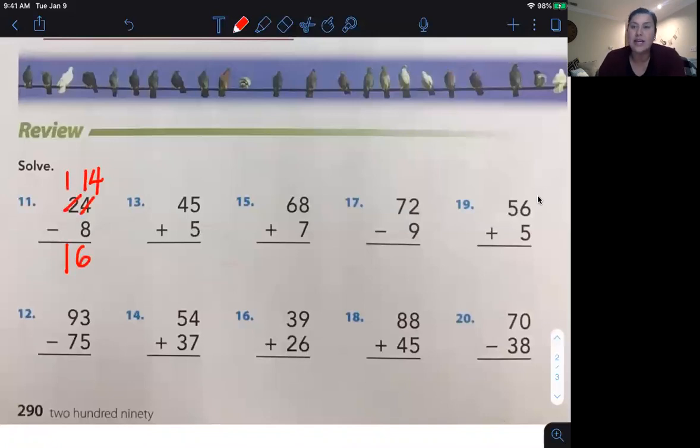Let's look at number twelve. Ninety-three take away seventy-five. Well, can I take five if I only have three? Nope. You can't. Let's borrow. Nine becomes eight. Three becomes thirteen. Thirteen take away five. Let's count backwards. Twelve, eleven, ten, nine, eight. Eight take away seven is one. Good job, friends. Forty-five plus five. Oh, easy peasy. That's a ten. Carry the one. Four plus one is five.